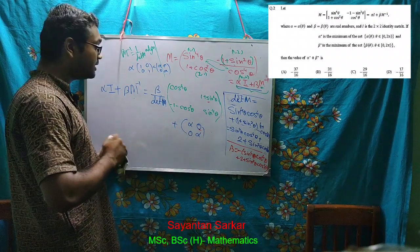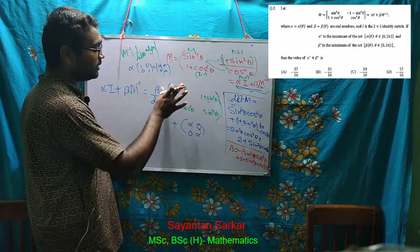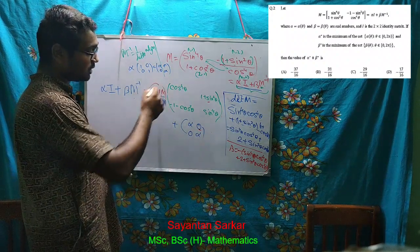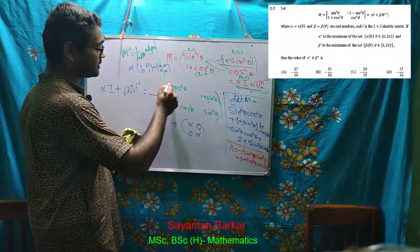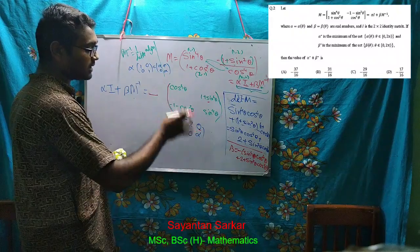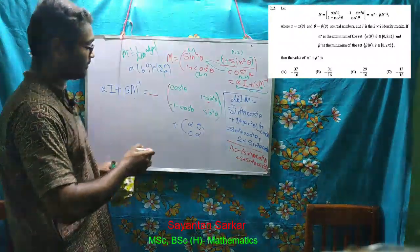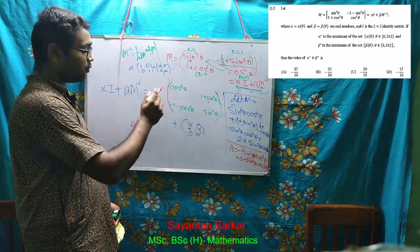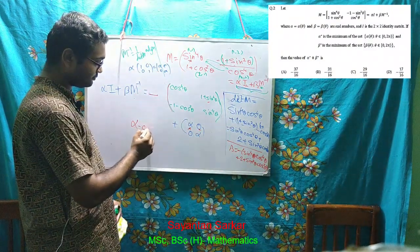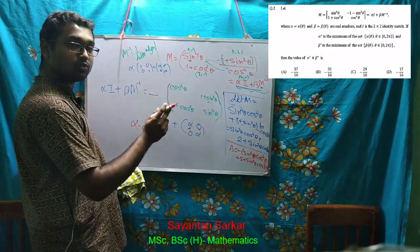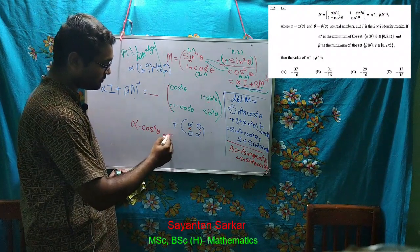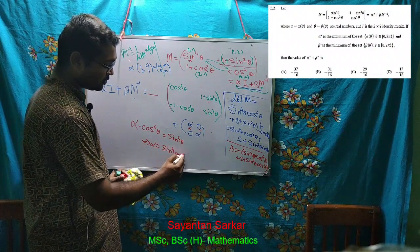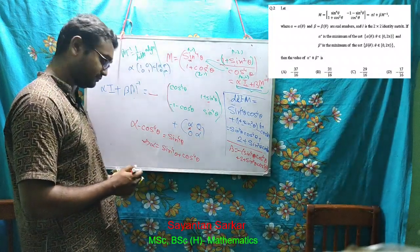So β equals minus of det(M), which means β equals minus of (sin⁴θ · cos⁴θ + 2 + sin²θ · cos²θ). Now to find α, I look at the (1,1) position. In the left matrix it is sin⁴θ; substituting β = -det(M) makes the β·M inverse term contribute minus cos⁴θ. Therefore α equals sin⁴θ plus cos⁴θ.